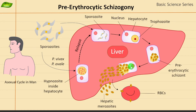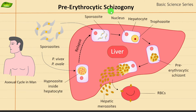Malaria is basically transmitted by the female Anopheles mosquito. That means there will be one cycle in the mosquito and another cycle in the humans or animals. The life cycle includes pre- or exo-erythrocytic schizogony, erythrocytic schizogony, and other parts.